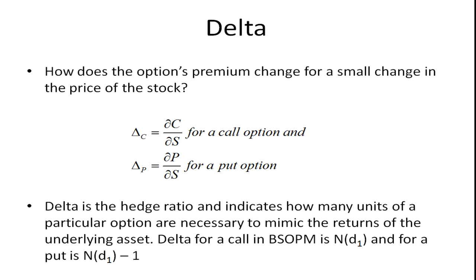Now let's take a look at the first one, which is delta. Delta tells us how does the option's premium change for a small change in the price of a stock. And what we do here to calculate it is we take the partial derivative of the premium with respect to the stock price. We could do that for the call or for the put.